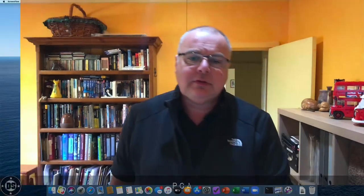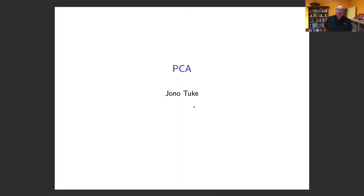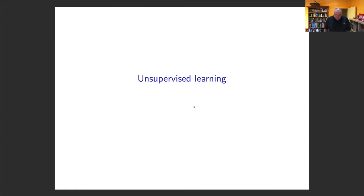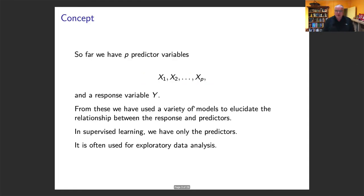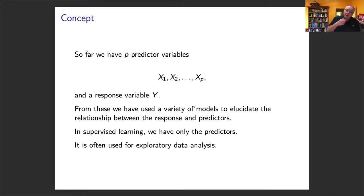We're going to look at something different now — unsupervised learning. We've mentioned PCA a couple of times with PCR and in data exploration, but let's actually have a good look at it. This belongs in what we call unsupervised learning. So far every time we've had a load of predictors — P predictors X1, X2 up to XP — we have a response variable Y, and we're trying to predict Y or explain the relationship between Y and the predictors.